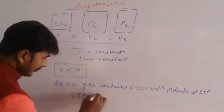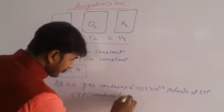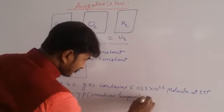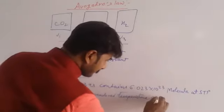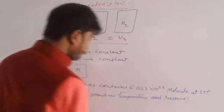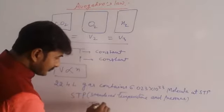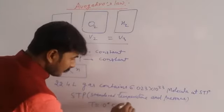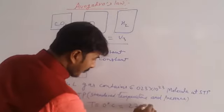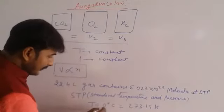Standard temperature and pressure. In this condition, temperature is taken as 0 degree Celsius, which is equal to 273.15 Kelvin, and pressure is taken as 1 bar.